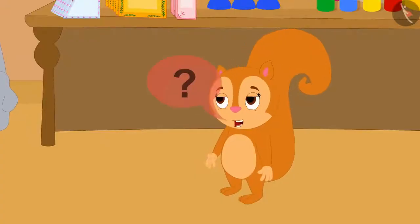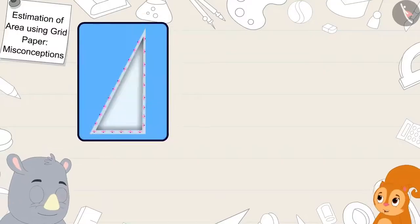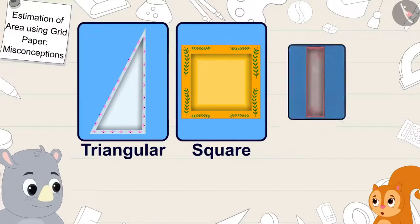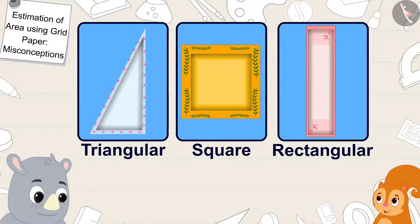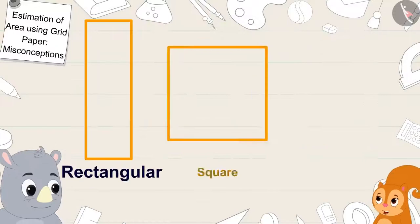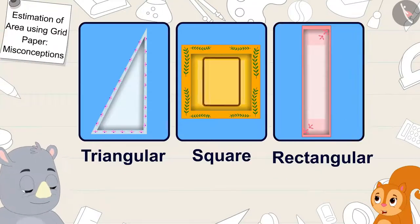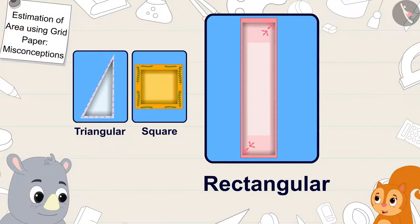But how is that possible, Gaggoo? This plate is triangular. This one is square shaped. And this plate is rectangular. Because rectangle is bigger than square and triangle, the rectangular plate is bigger than both these plates. Chanda said to Gaggoo.